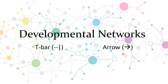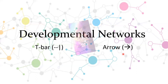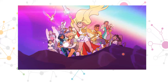There are scientific examples like the anterior-posterior axis developmental network in maternal genes, but to help visualize it and make it a little easier to understand, I'll be using characters from She-Ra and the Princesses of Power. This is based around season three, so there are slight spoilers ahead.